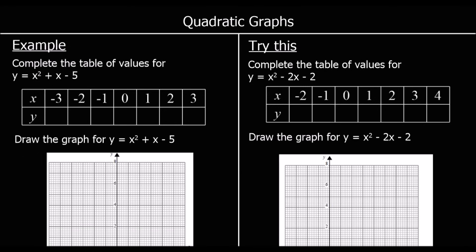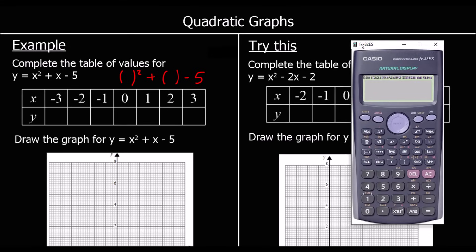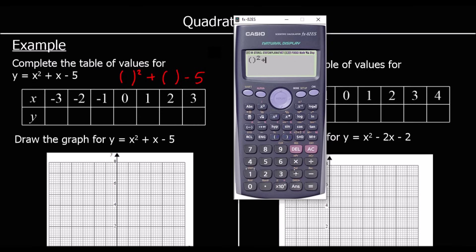Now we're being asked to draw a quadratic graph. The first step is to complete the table of values, then use the coordinates we work out to draw the graph. If you have a calculator, you should use brackets to substitute numbers in. Wherever you see an x, replace it with brackets — so brackets squared plus brackets minus 5 — then put the x values into the brackets.